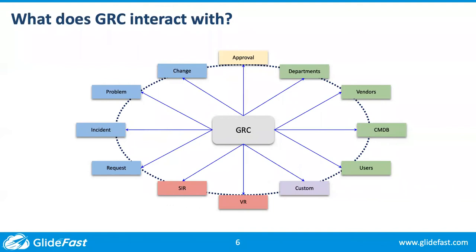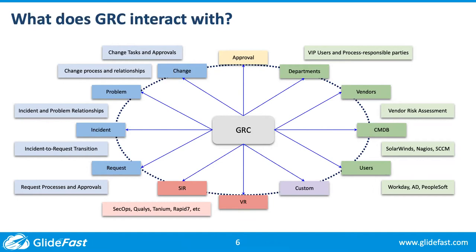I once had a bank that had a problem with their change process — they felt there was a good chance that change tasks were actually being done without proper approval. Being able to dig into the relationships of change requests, change tasks, and approvals allowed us to see that in six months, out of 2,600 change requests, 60% had a change task that was activated and completed before approval had been given. The relationships behind the scenes, along with all supporting data being available to GRC, allows you to look deep into business processes and figure out where issues actually reside.